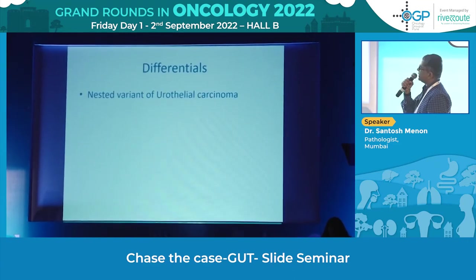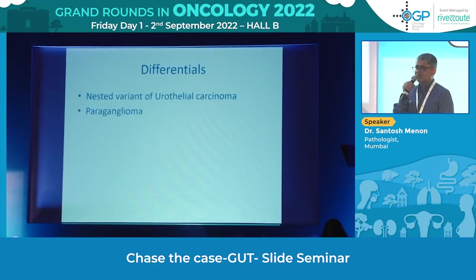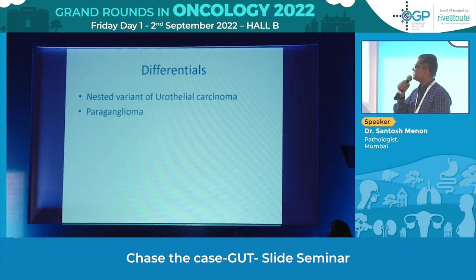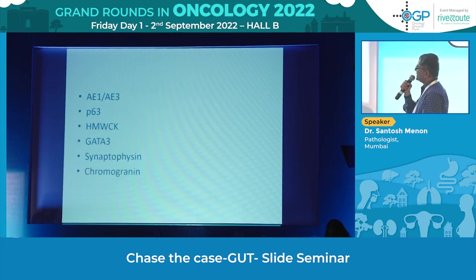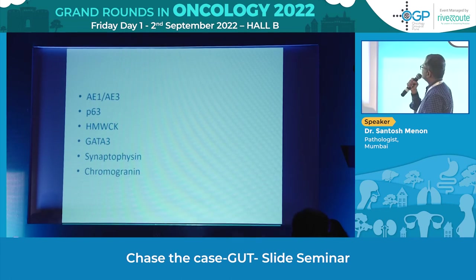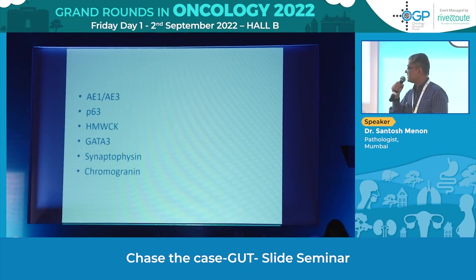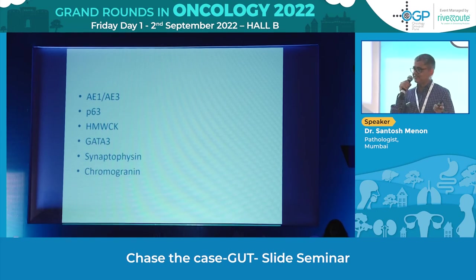That's when you have to eat your words when you get the IHC results. AE1/AE3, P63, HMWCK, GATA3, and Synaptophysin were all negative. I was so determined to prove to my resident this was a paraganglioma that I repeated GATA3 and Synaptophysin. But at the end they had the last laugh. AE1/AE3 came with an unusual pattern, GATA3 was dead negative, and P63 was dead negative.